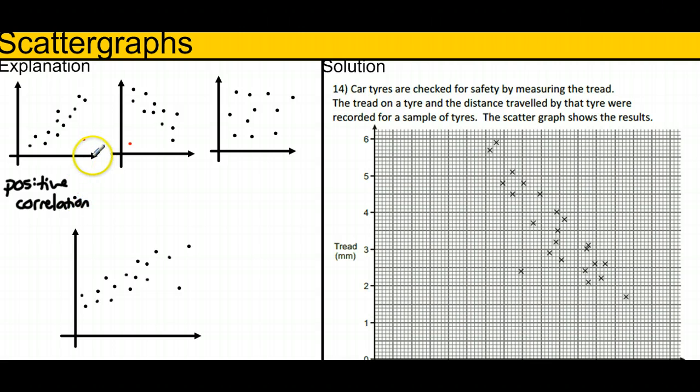Which suggests that as one quantity goes up, so does the other. If you get a different scenario where as one quantity increases, the other one decreases, then it's called a negative correlation.